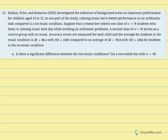Number 15: researchers investigated the influence of background noise on classroom performance for children aged 10 to 12. Calming music led to better performance on arithmetic tasks compared to a no-music condition. A researcher selects one class of 18 students who listen to calming music while working on arithmetic problems; a second class of 18 serves as a control group with no music. The music group averages 86.4 with SS equal to 1550; the no-music group averages 78.8 with SS equal to 1204. Is there a significant difference using a two-tailed test with alpha equal to 0.05?